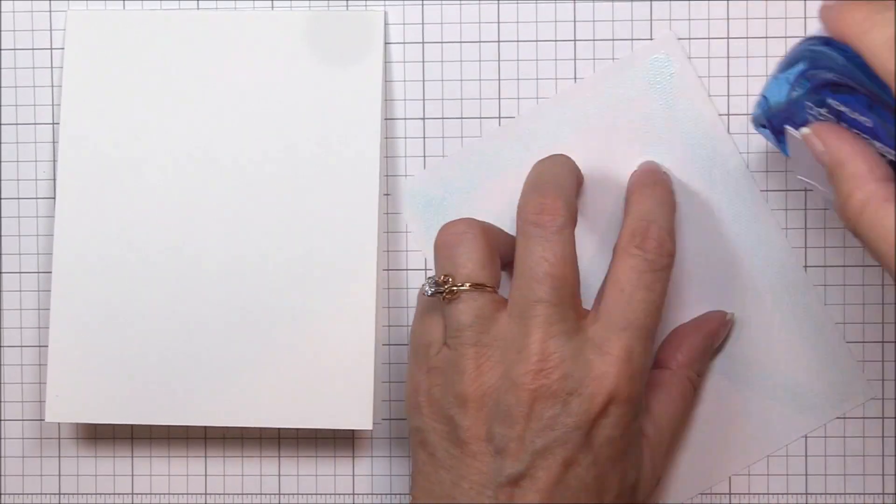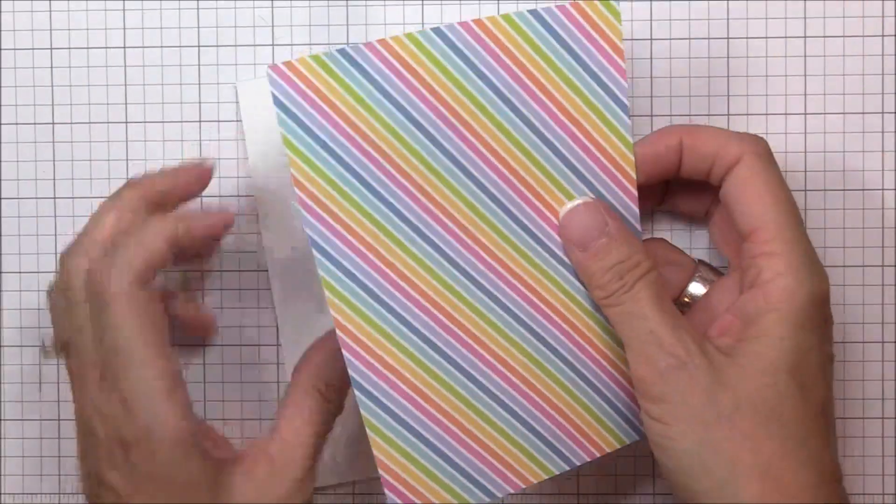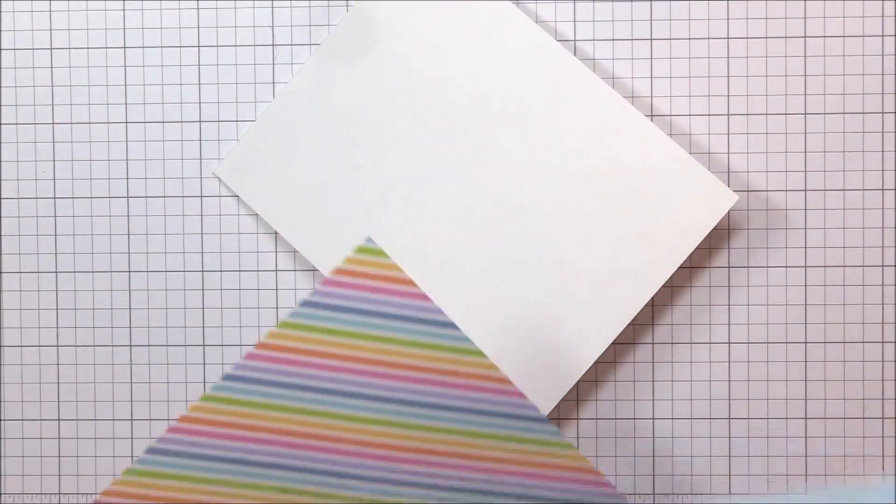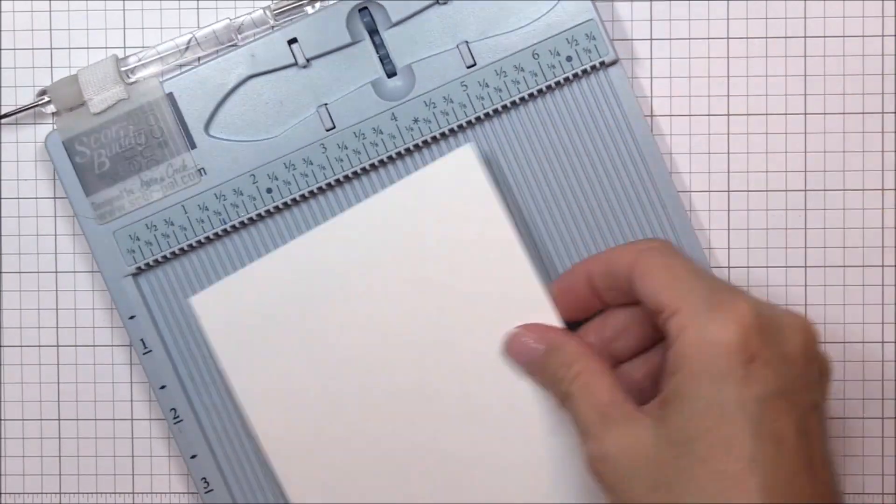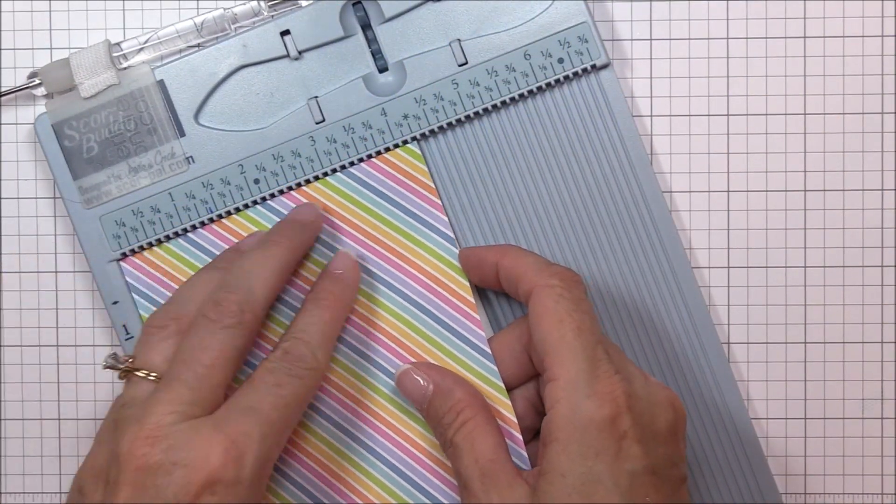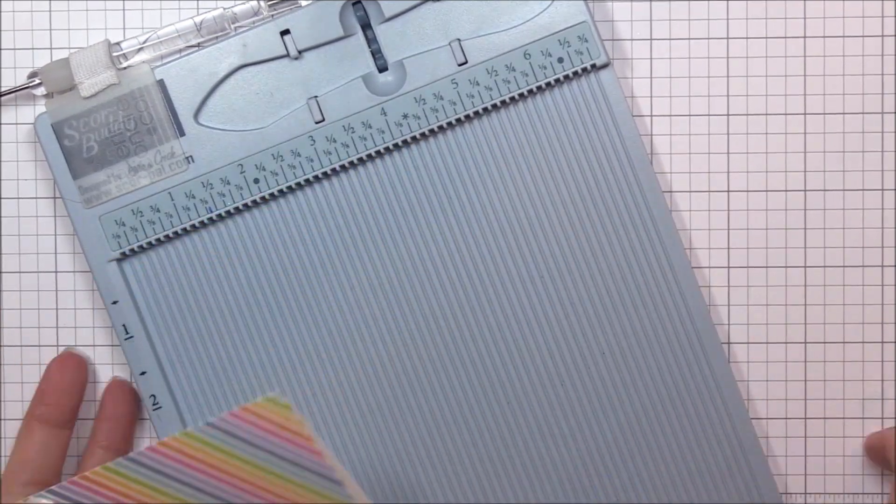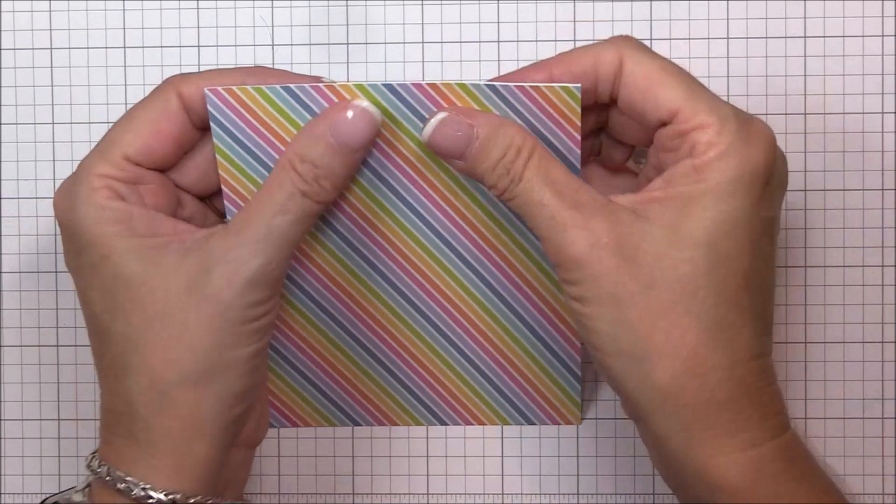I trimmed a piece of rainbow stripe pattern paper to four and a quarter by five and a half inches and I'm adhering it to my A2 top folding card base. To make sure that the pattern paper is adhered to my card base perfectly, I'll lay the base inside my scoreboard and use the top and left edges to align the pattern paper. Just a little trick I learned that I thought I'd share with you all.